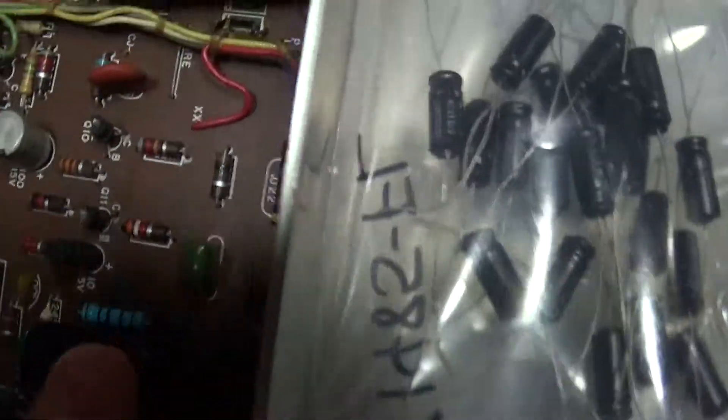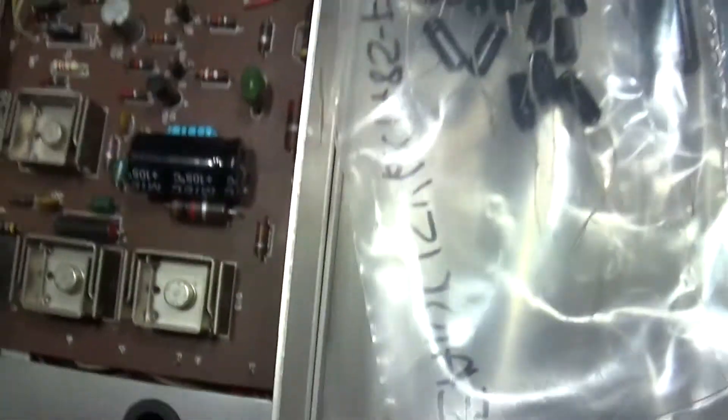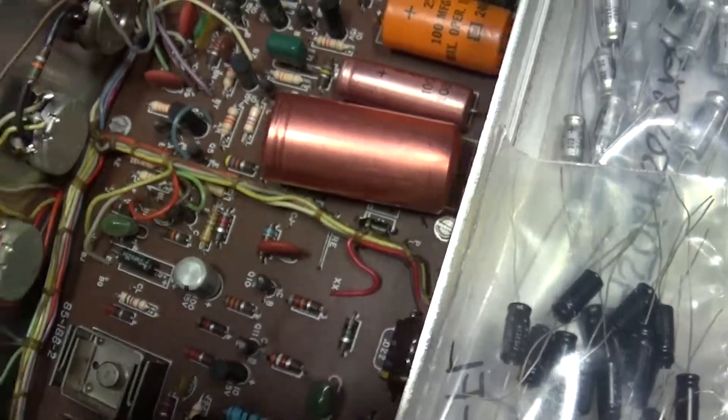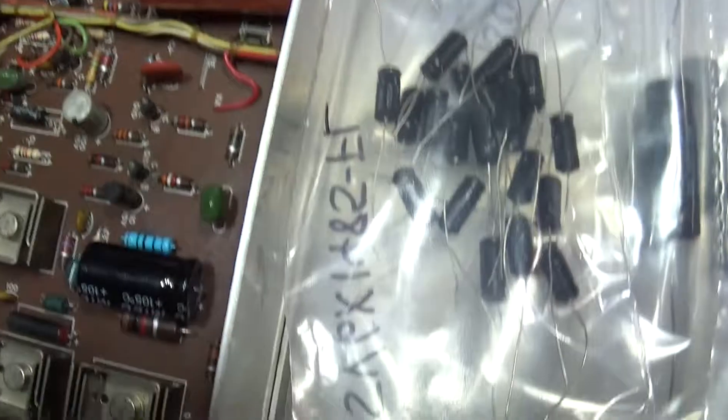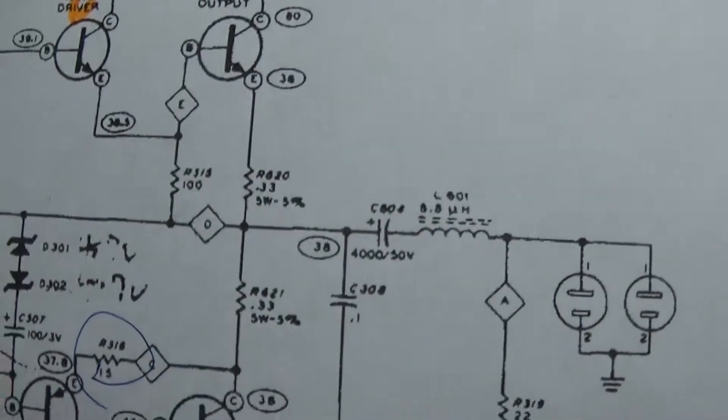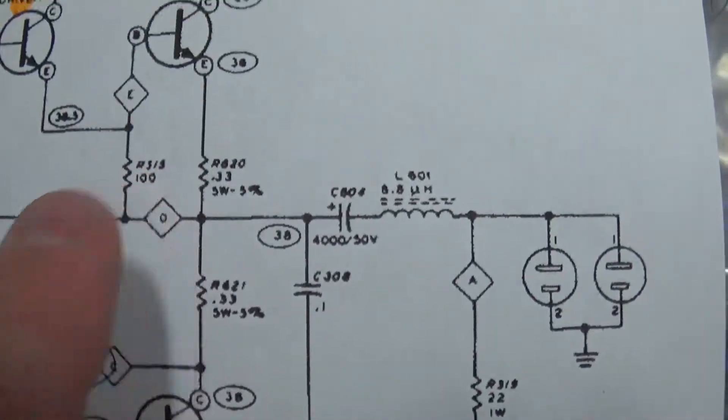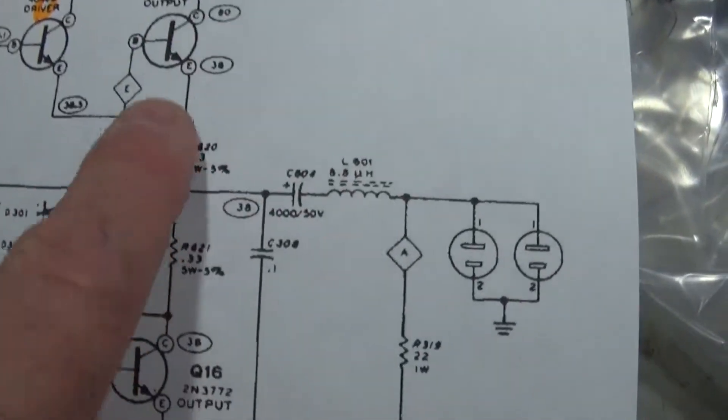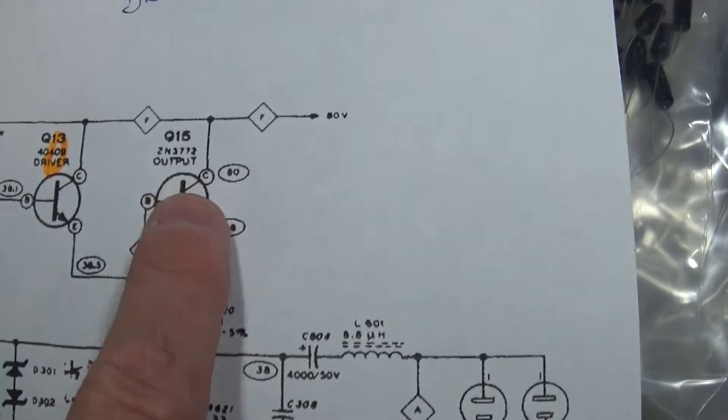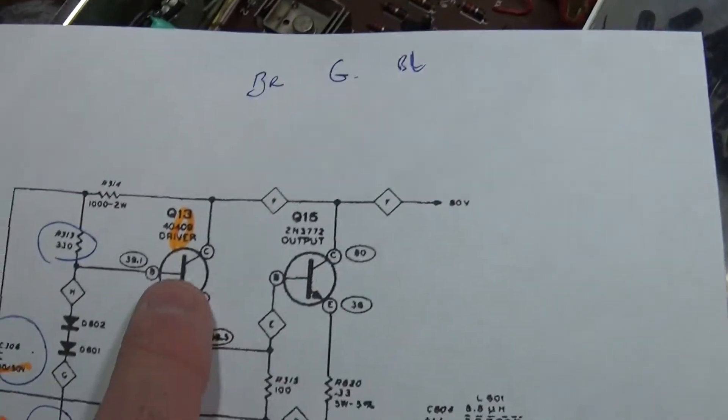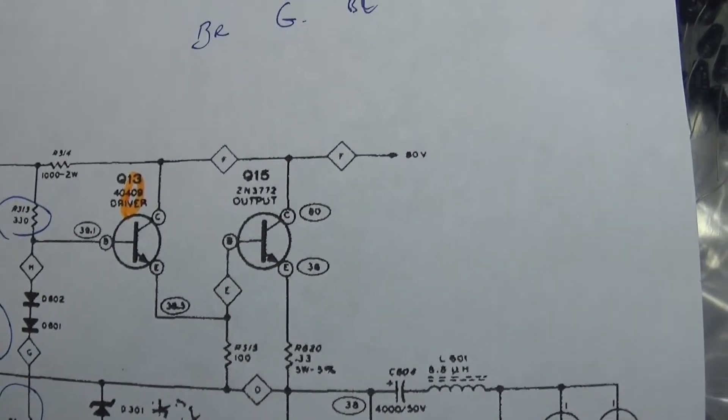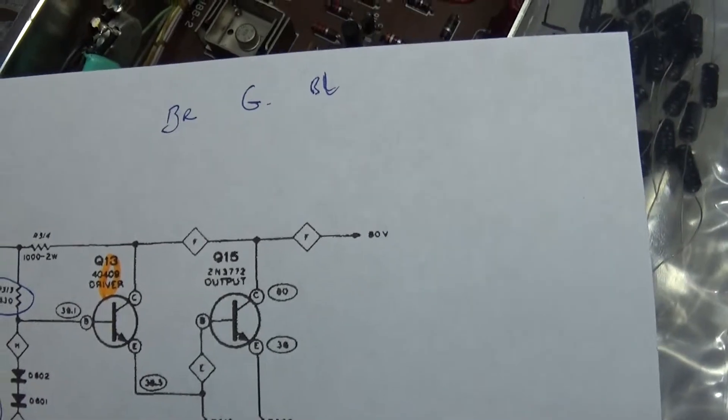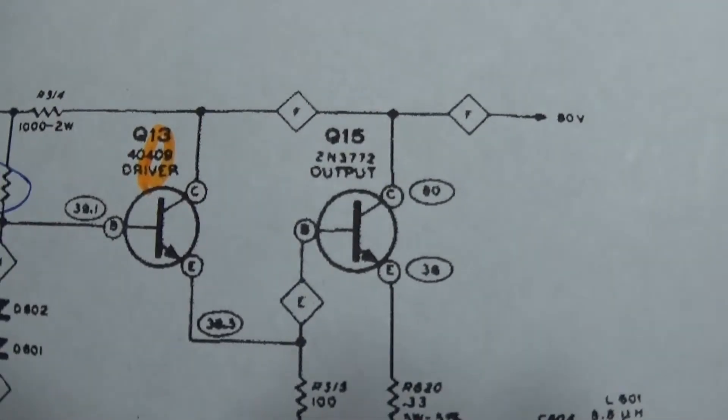Just a little bit of an update. If you recall, this resistor here that I found burnt, it actually goes to a couple of places on the schematic. Let me pull the schematic out and show you what I mean. Here's the resistor that I replaced. You'll see it goes up to Q15 and up to Q13. Those are the ones that we're going to focus on.